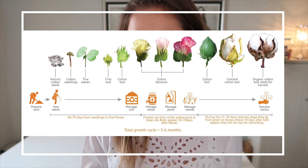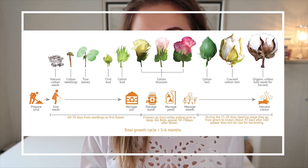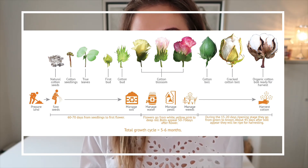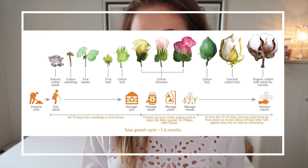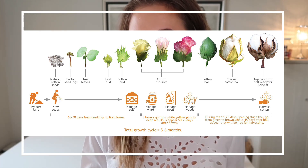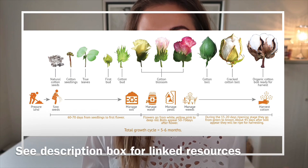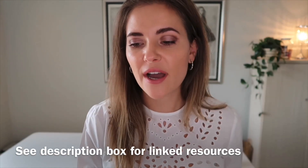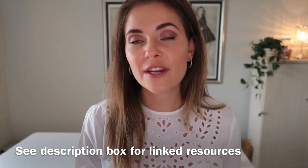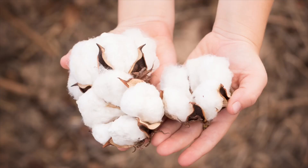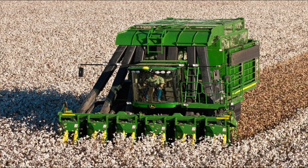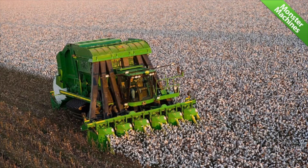During this time, soil fertility, water, pests and weeds need to be managed. 45 days after the ball appears, the cotton ball will begin to naturally split open along with the ball's segments. Once the cotton ball is fully dried and fluffed, it is ready for harvesting. The harvesting of cotton balls can either take place by hand, or in modern days machines are used to strip away the cotton balls from the plant.